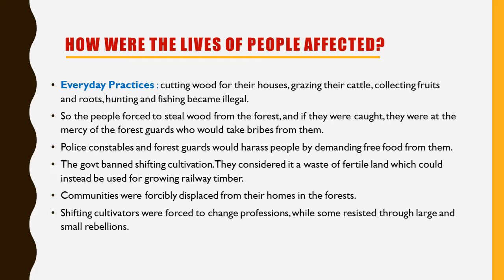Police constables and forest guards would harass people by demanding free wood from them. The government also banned shifting cultivation, considering it a waste of fertile land which could instead be used for growing railway timber. Communities were forcibly displaced from their homes in the forests, and shifting cultivators were forced to change professions, while some resisted through large and small rebellions.